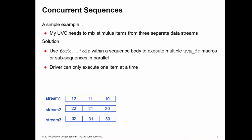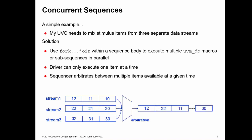However, my driver can only execute one item at a time. My sequencer has a built-in arbitration mechanism that allows us to select between the multiple items which are available at a given time and pass one item at a time down to the driver.